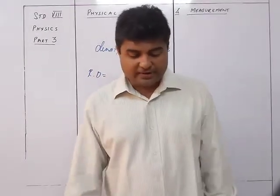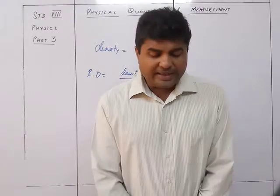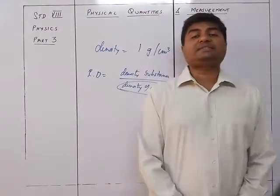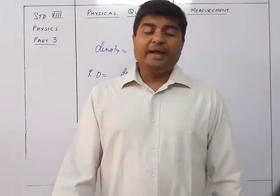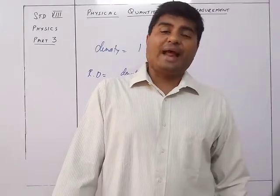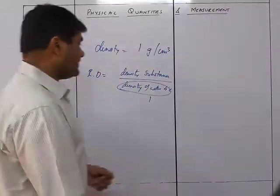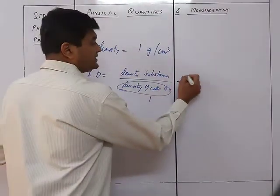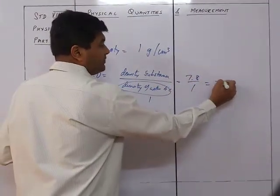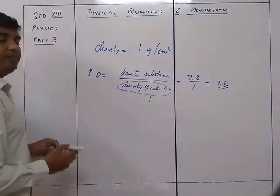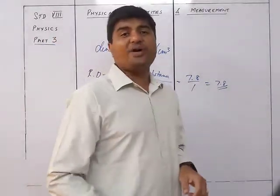For example, the density of iron is 7.8 gram per centimeter cube and that of water is 1 gram per centimeter cube, so the relative density will be 7.8 divided by 1, which equals 7.8. So 7.8 is the relative density of iron.